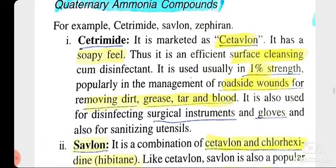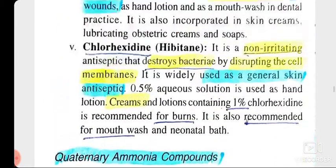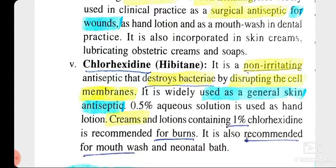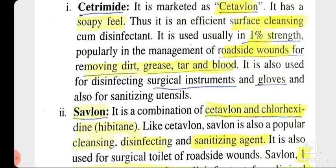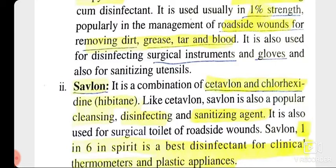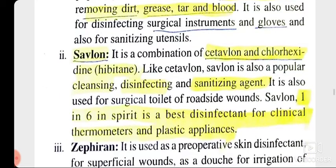Savlon is a combination of cetavlon and chlorhexidine — so savlon is a combination of both quaternary ammonium compound and coal tar disinfectant. It contains cetrimide and chlorhexidine. So savlon is a mixture of coal tar and quaternary ammonium compound, whereas Dettol is only a coal tar disinfectant. Therefore savlon is more powerful than Dettol. Savlon is popular as a cleaning, disinfecting, and sanitizing agent, used for surgical wound cleaning.